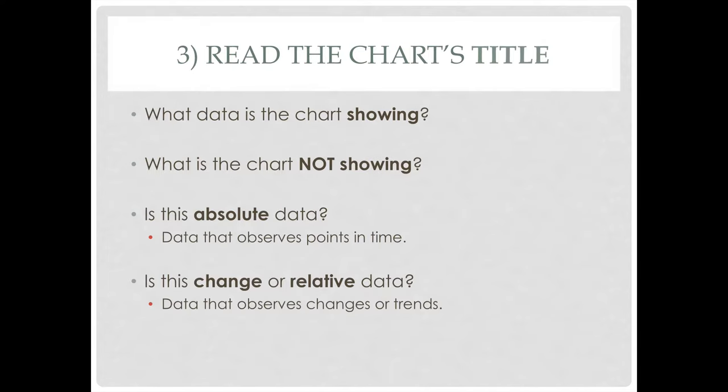Number three: once we've figured out where a chart is from, we want to read the chart's title. What data is the chart actually showing, and what is it not showing? Is this absolute data — meaning data that observes a point in time? For example, 'in 1996, 15 people were driving school buses' — that's absolute data. Or does this chart give us change or relative data, pointing out a trend? For example, 'between 1995 and 2005, 20,000 more people began driving buses.' That doesn't mean 20,000 people were driving buses — it means 20,000 more joined the ranks. We have to be very clear about what we're reading.